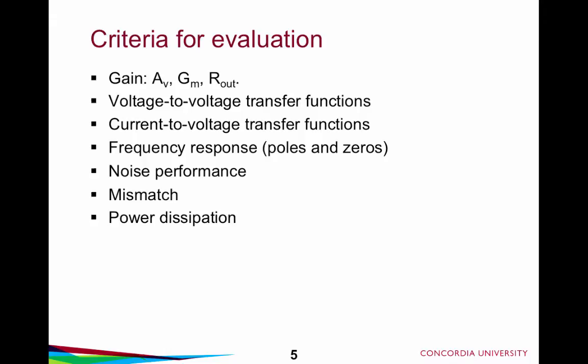When looking at a circuit under some modification to its design point, we're going to want to look at it in terms of its voltage gain, the short circuit transconductance, and the output resistance. To consider noise performance and mismatch, we'll speak more generally about voltage-to-voltage transfer functions and current-to-voltage transfer functions — meaning if current is injected into one node, what happens to the voltage at another node? We're also going to look at the frequency response, whether poles and zeros are moving, whether the unity gain frequency is changing, as well as noise performance, mismatch, and power dissipation.